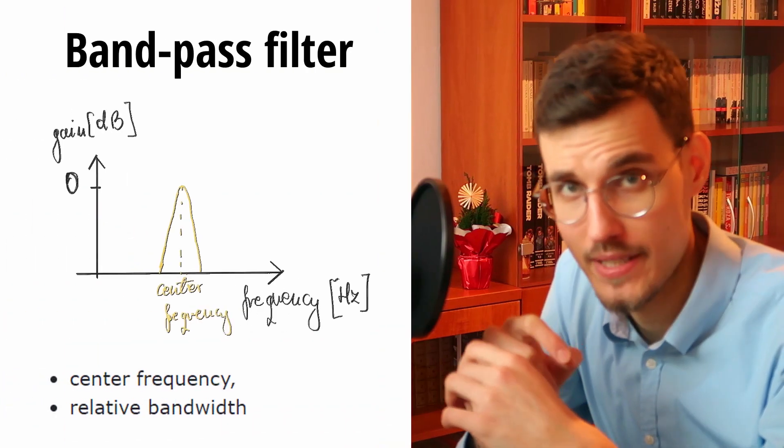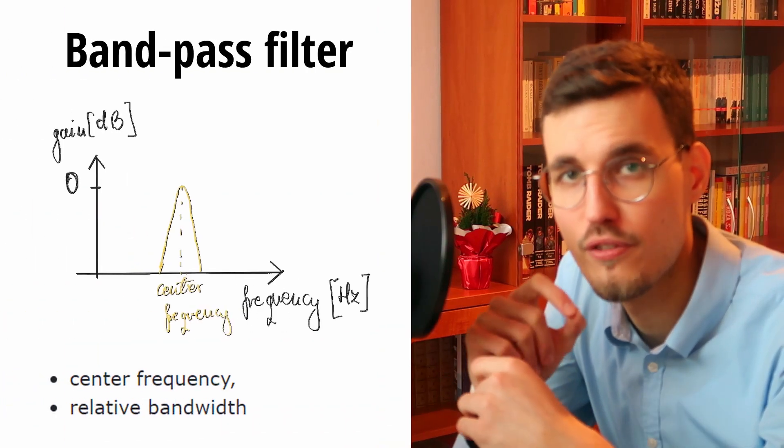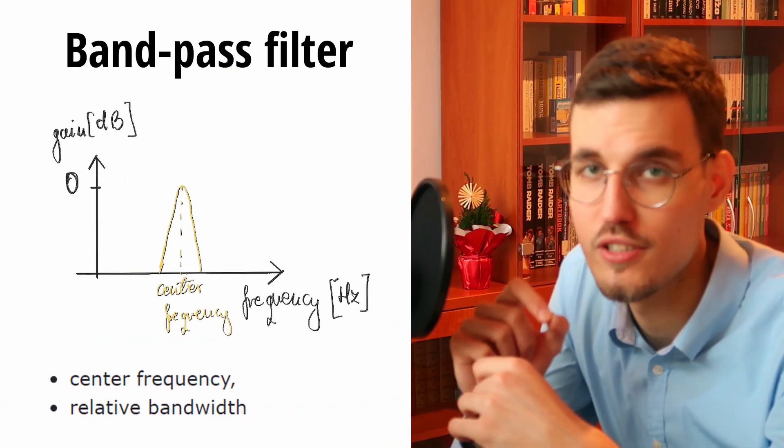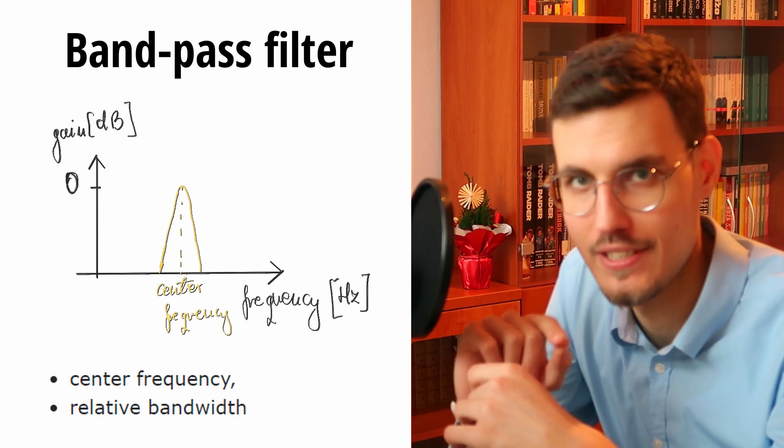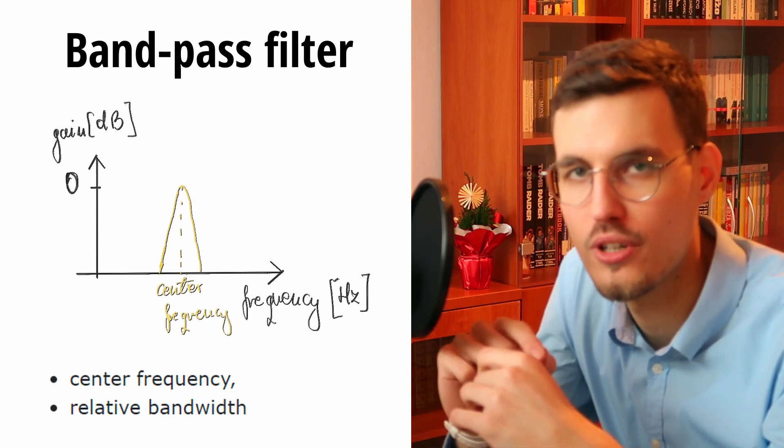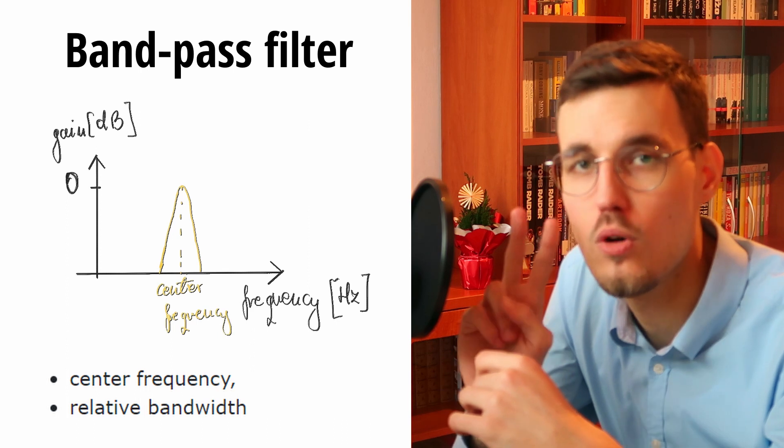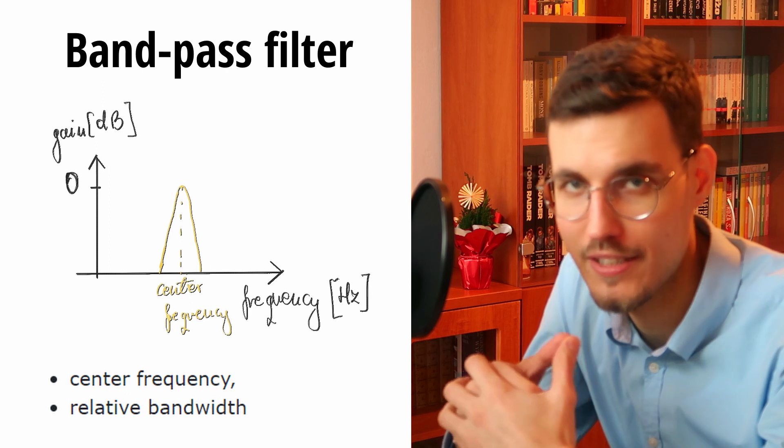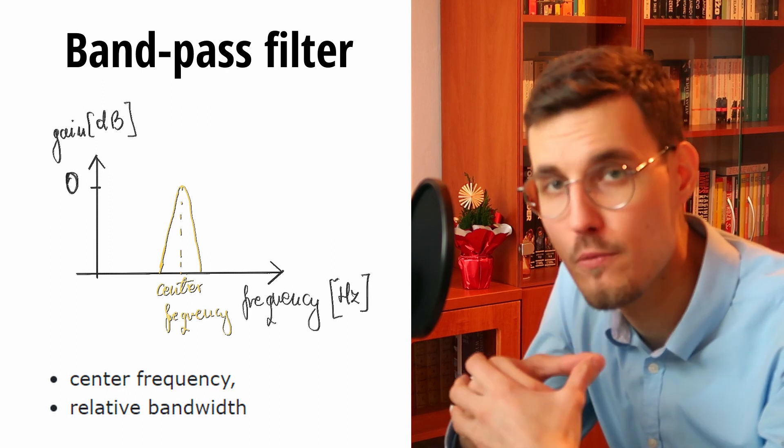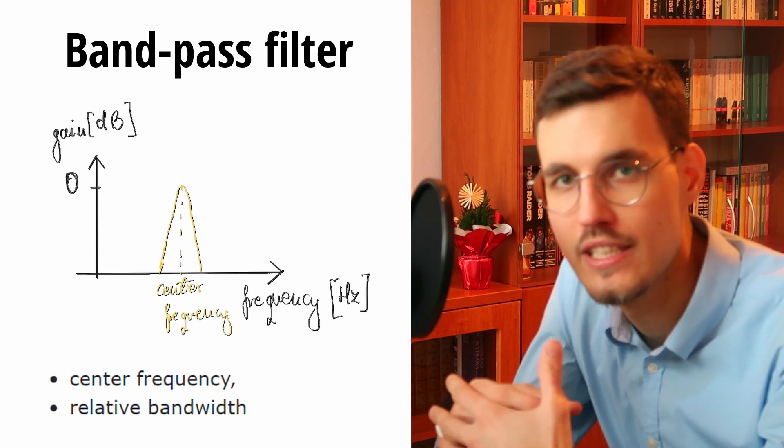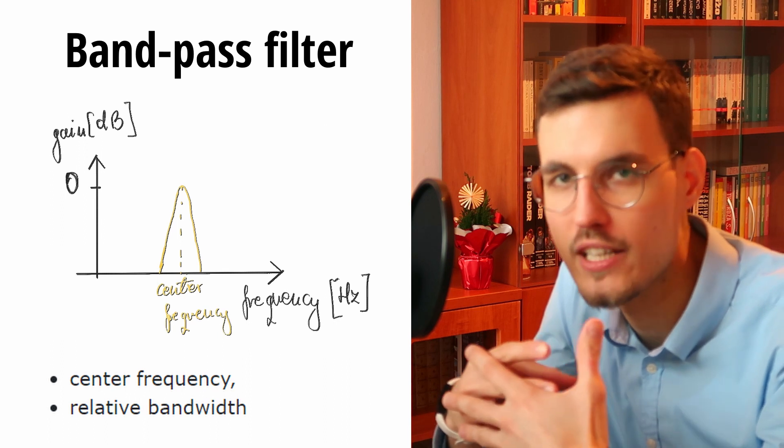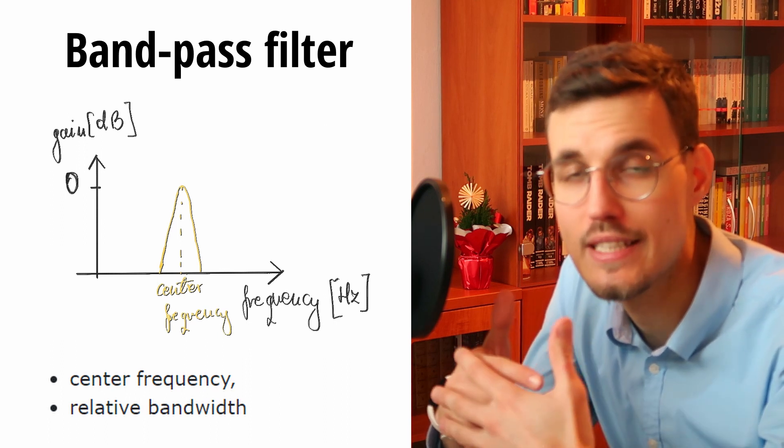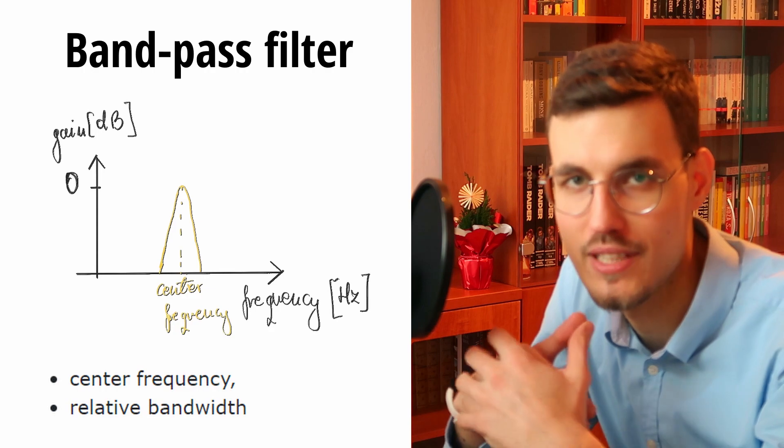A bandpass filter passes through frequencies only in a certain range. It cannot additionally boost or attenuate them. The only two parameters that a bandpass filter has is the center frequency and the bandwidth or alternatively the Q, so quality factor parameter. Here is how a bandpass filter sounds.